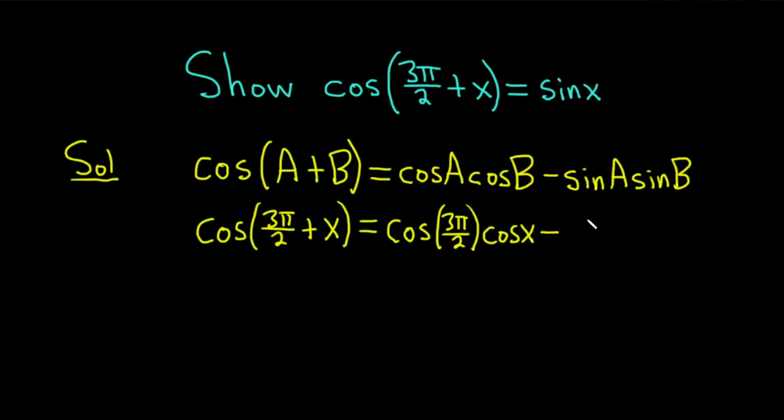And then minus, and then we have the sine of A, which is 3π/2. And then sine of B, but B is x, so it's sine of x.